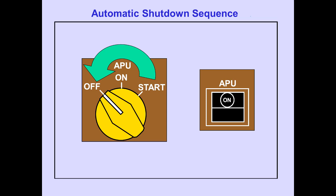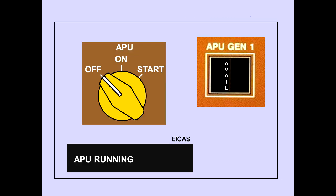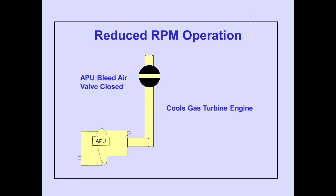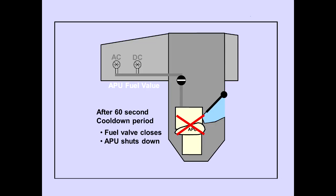Rotating the APU selector to off initiates the automatic shutdown sequence. If open, the APU bleed air valve closes. The memo message APU running is no longer displayed and the lights in the generator control switches extinguish as the generators shed their load. The APU continues to operate unloaded for 60 seconds to allow the gas turbine engine to cool before shutdown. After the cool-down period, the fuel valve automatically closes and the APU shuts down.